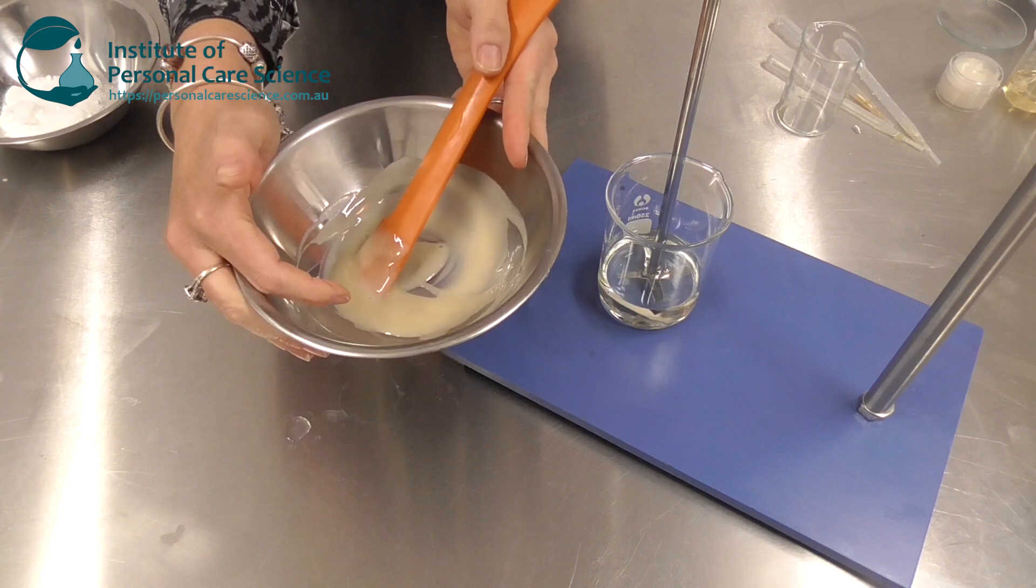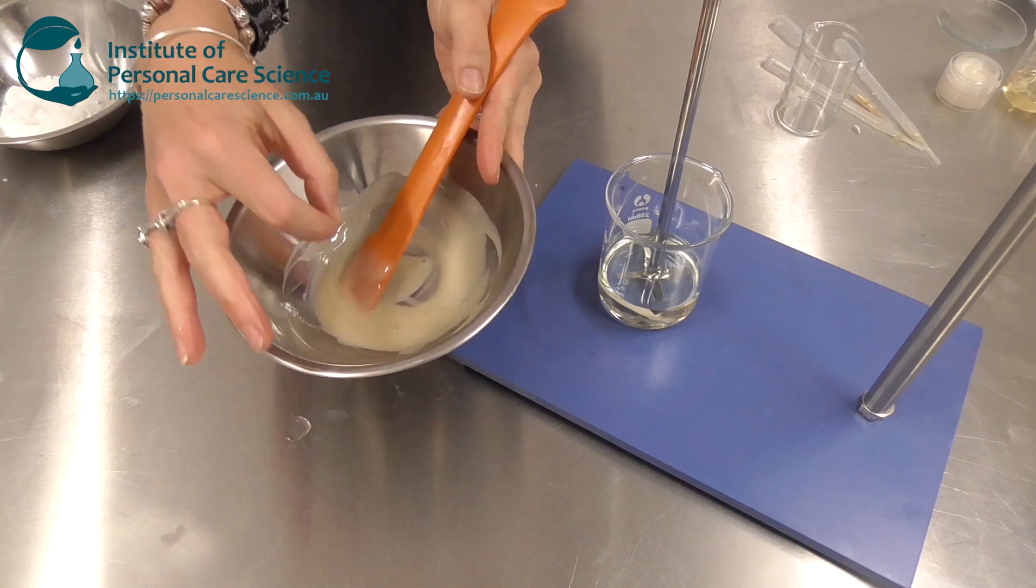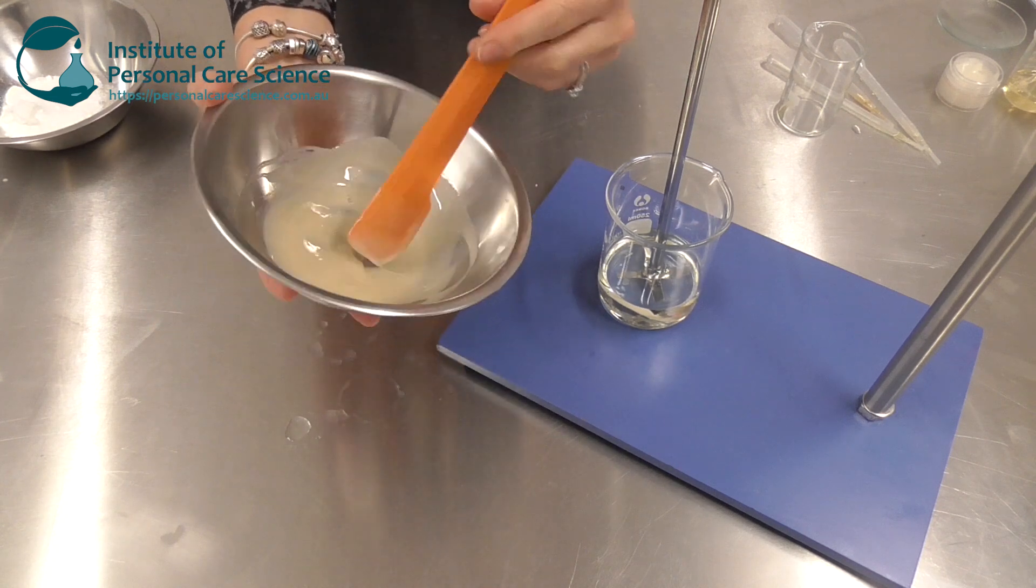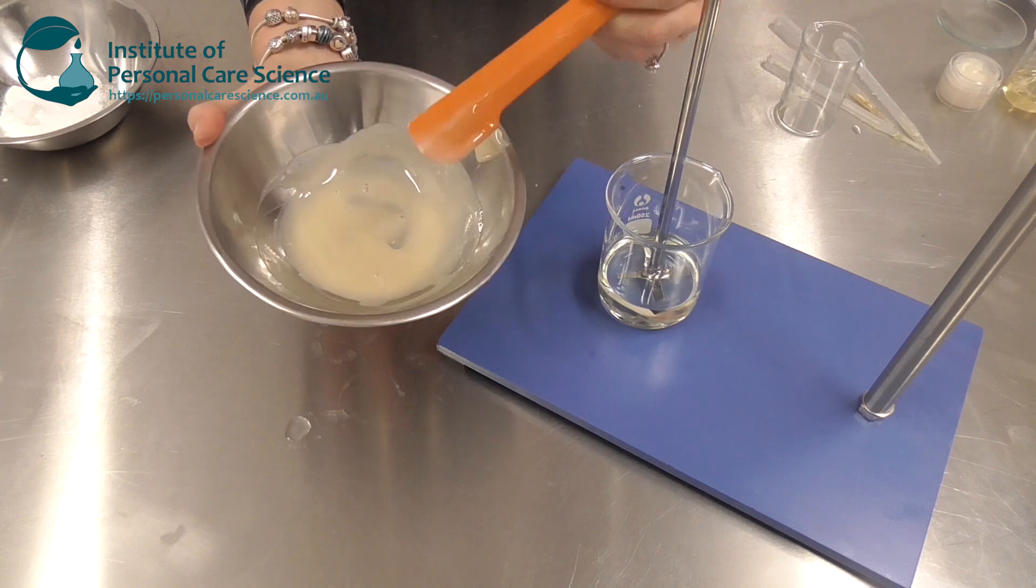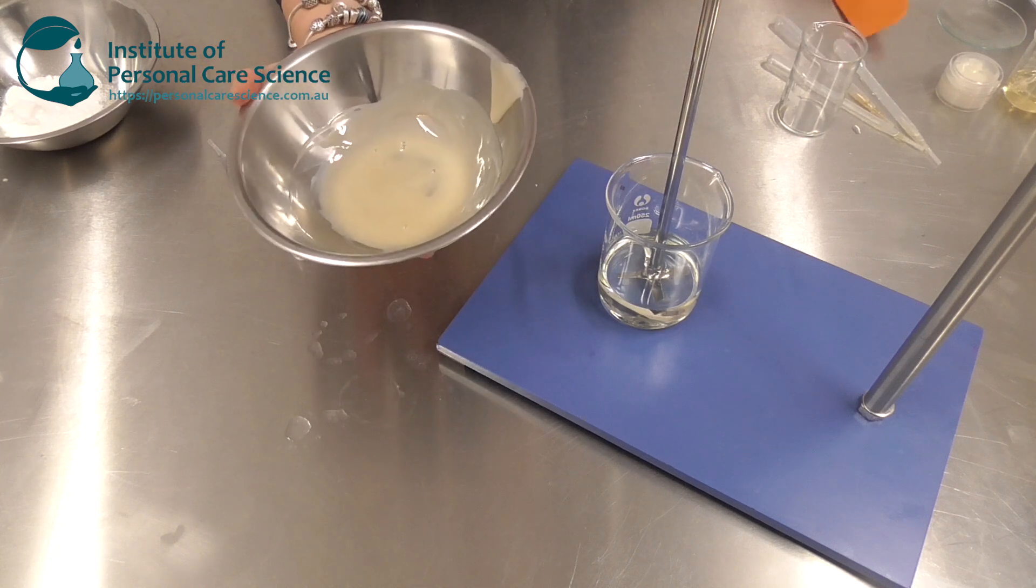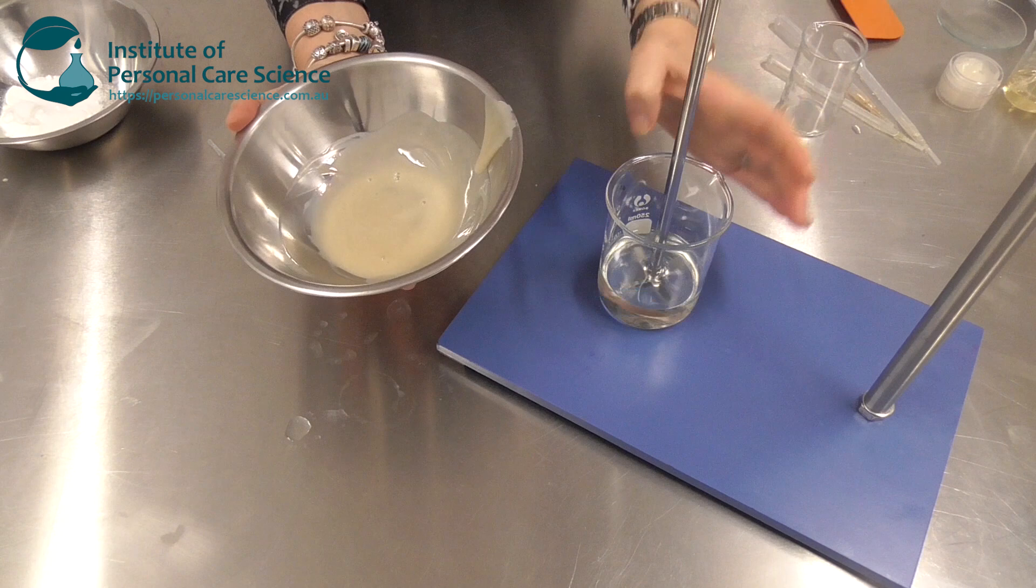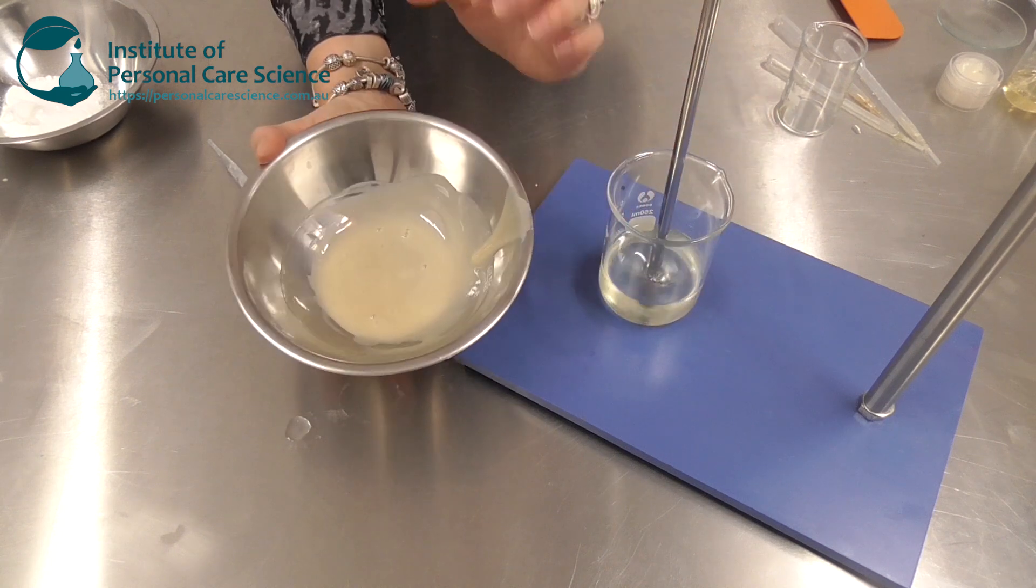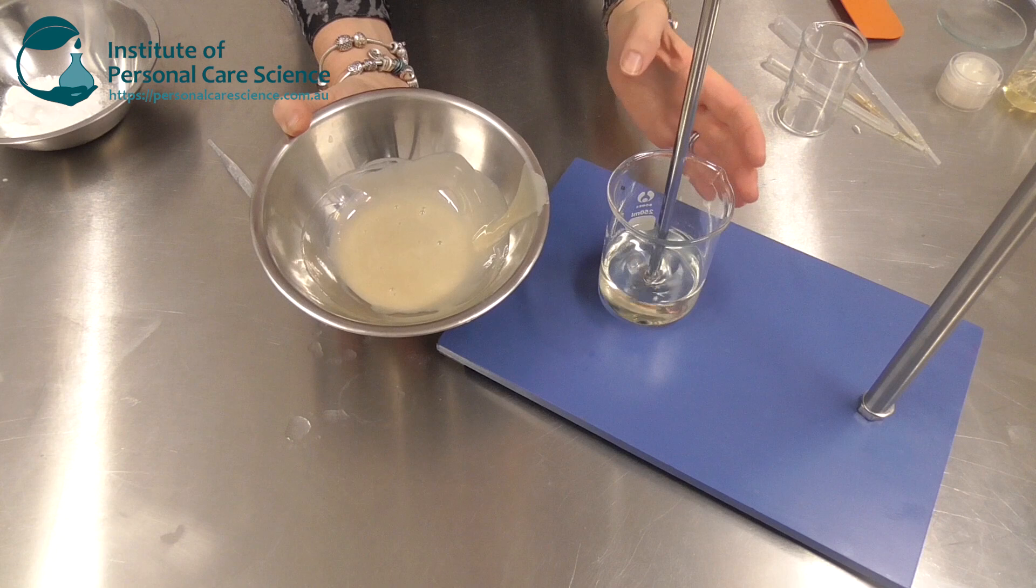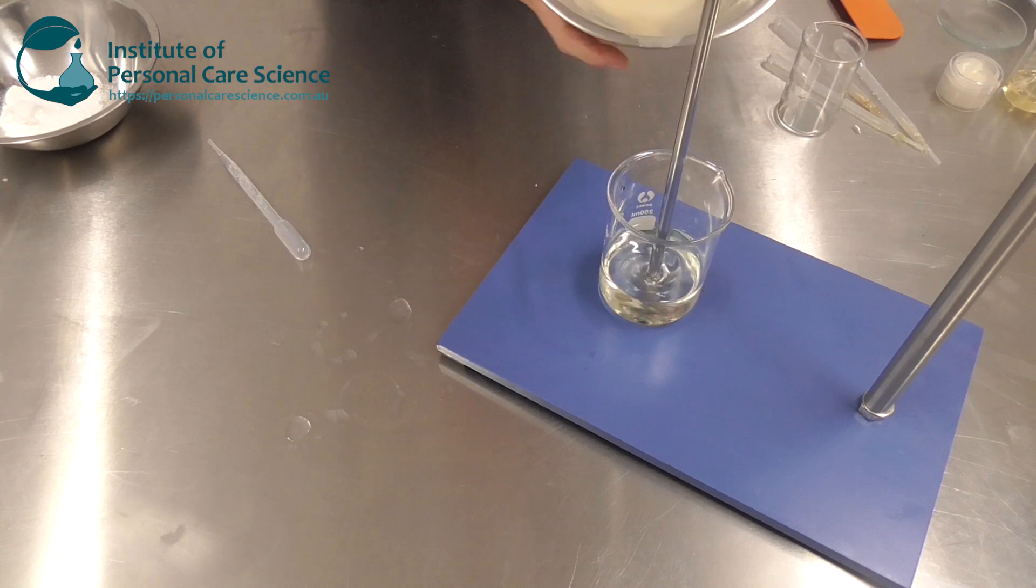So now my water soluble materials are on the inside of the micelles formed here. Now I'm going to add this to my oil phase slowly, just like we do when we are solubilizing oil soluble materials in water, except I'm doing it the opposite way around for this product.